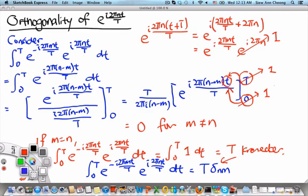We see that when m equals n, then we get a non-zero integral value. If m is not equal to n, then we get 0.